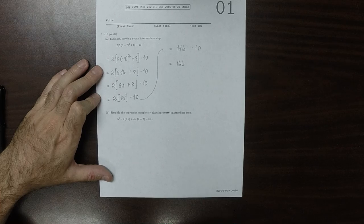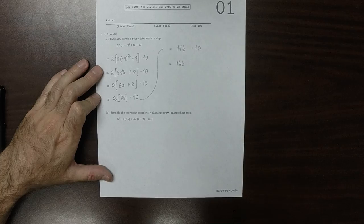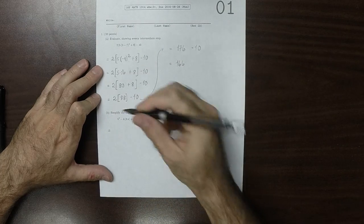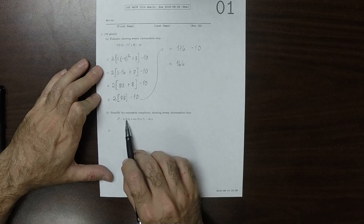Similarly in part B, show every intermediate step. Okay. So we have parentheses, parentheses, etc. So then parentheses must occur first.